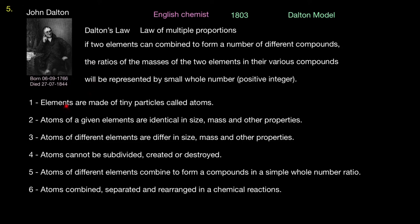Dalton then went on to state that elements are made up of tiny particles called atoms, and that atoms of a given element are identical in size, mass, and other properties. Atoms of different elements differ in size, mass, and other properties. Atoms of hydrogen will be different from atoms of nitrogen. Every element is made up of their own atom. Atoms cannot be subdivided, created, or destroyed. That means you cannot go beyond an atom. Atom is the smallest unit you can get. Atoms of different elements combine to form compounds in a simple whole number ratio. And atoms combine, separate, and rearrange in a chemical reaction.